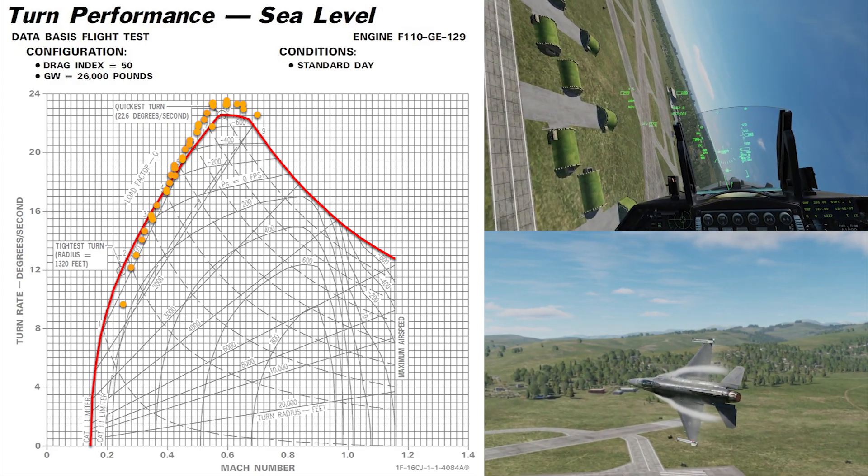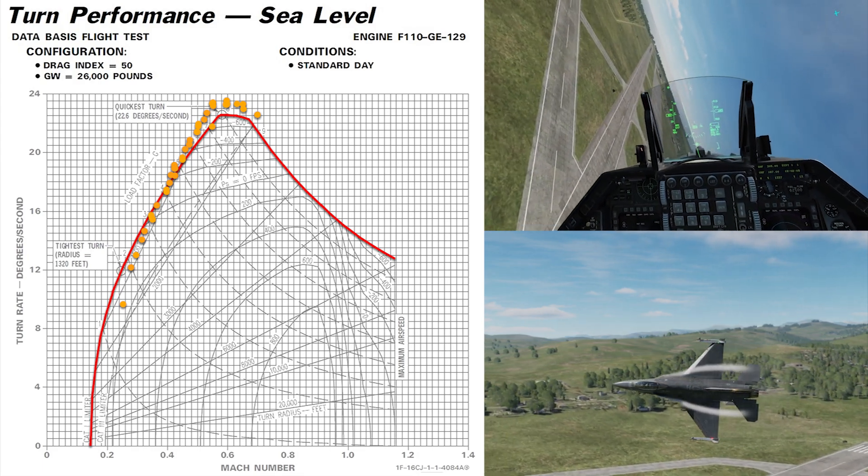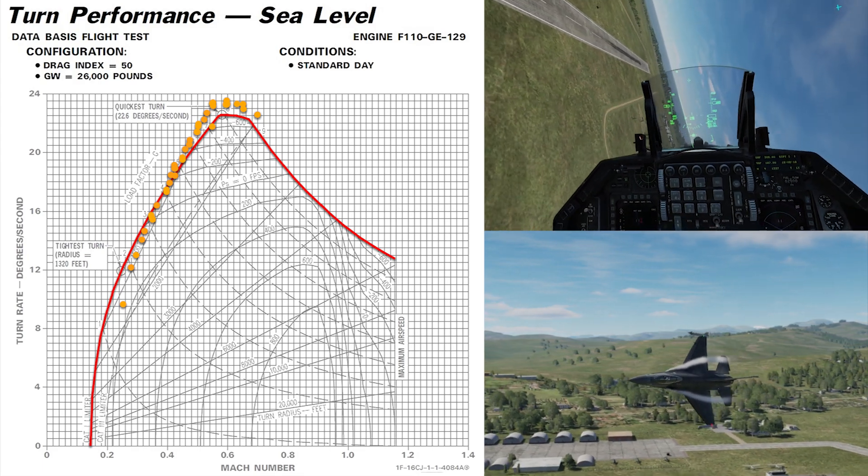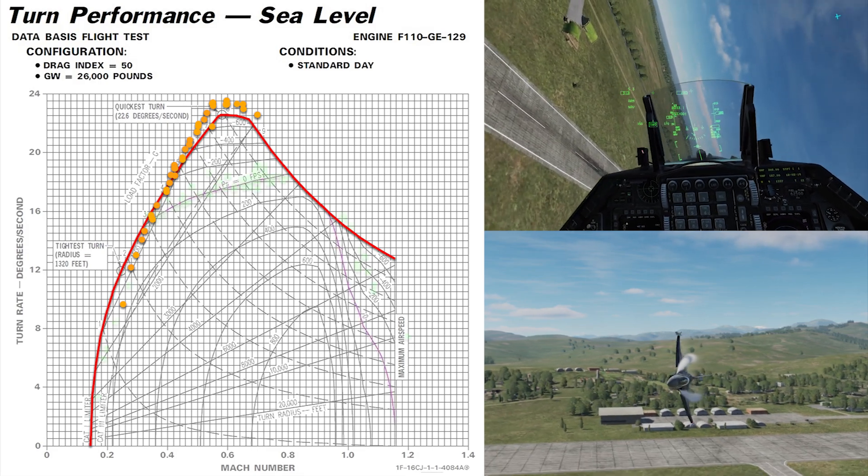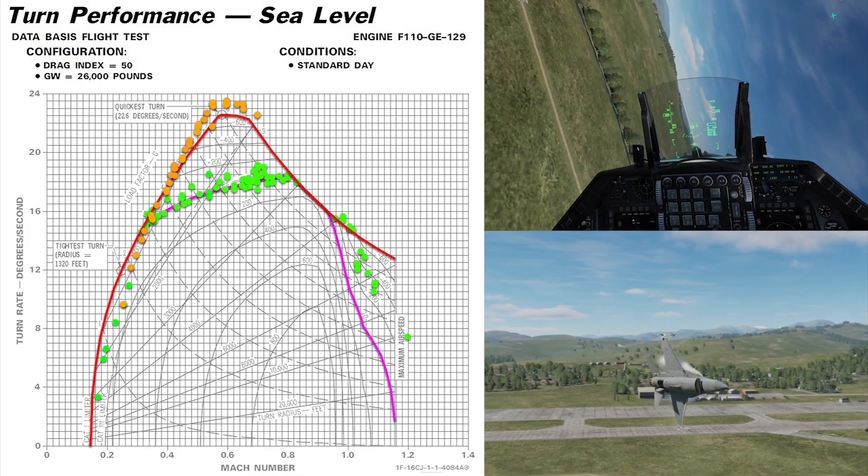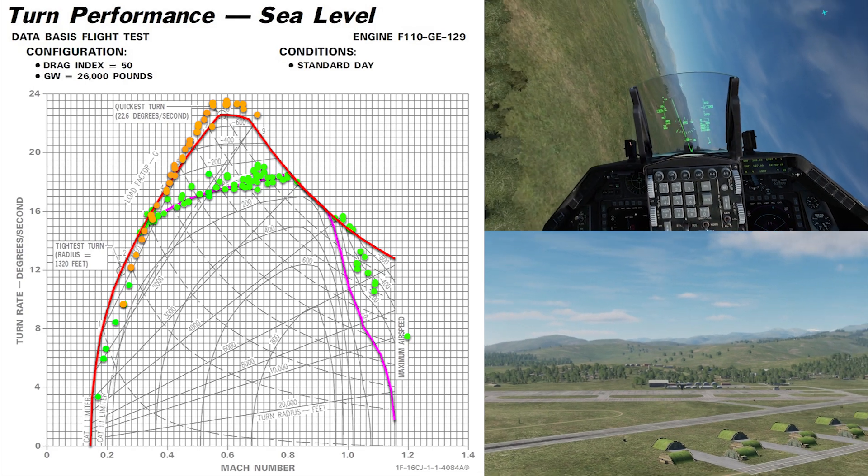There's maybe half a degree of over-performance at its peak, but because this is instantaneous turns and the speed drops rapidly, that is not that much of an over-performance. I mean this is almost as good as it gets. So for sea level under Mach 0.9, I would say this F-16 is right on the money.